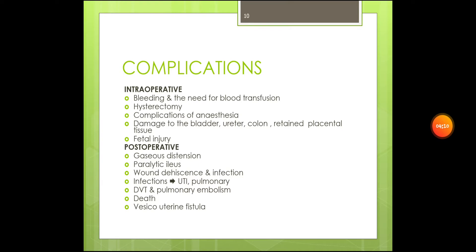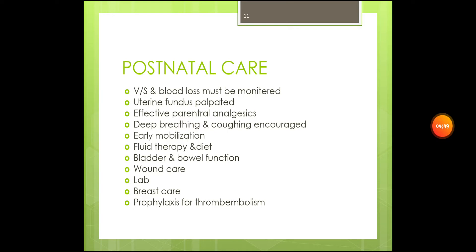What are the complications of cesarean section? Intraoperative complications include bleeding and the need for blood transfusion, possible hysterectomy, complications of anesthesia, damage to the bladder, ureter, or colon, retained placental tissue, and fetal injury. Postoperative complications include gaseous distension, paralytic ileus, wound dehiscence, infection such as UTI, DVT and pulmonary embolism, death, or vesico-uterine fistula.